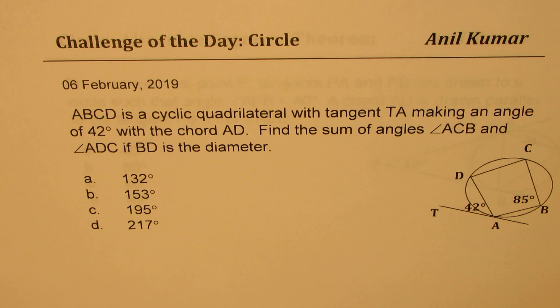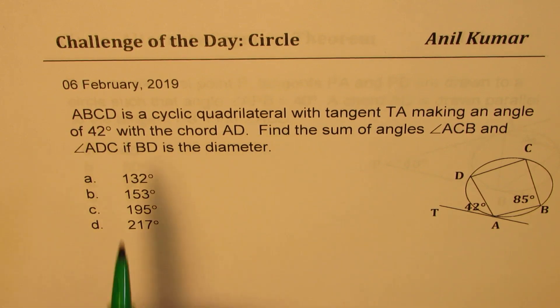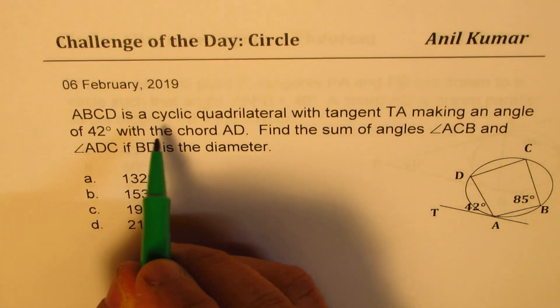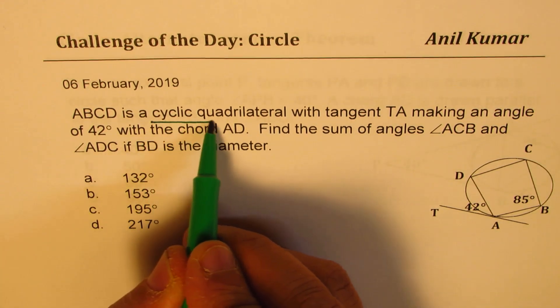Now for the benefit of most of my viewers, since they may not be conversant with this topic, let me explain a few things. ABCD is a cyclic quadrilateral which is inscribed in the circle. Now what does that mean? You need to work out on this. What is a cyclic quadrilateral?